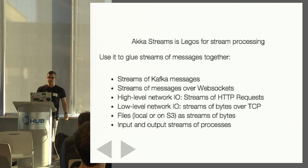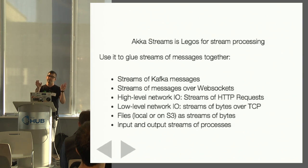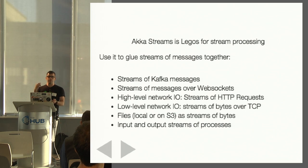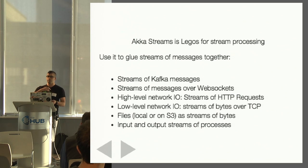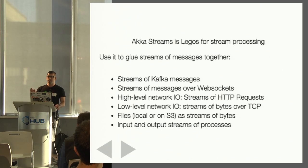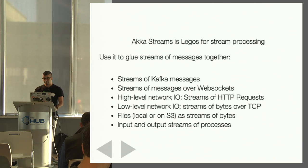So you can use streams of Kafka messages, streams of messages over WebSocket. You can do high-level IO — you can write a server that's basically a transformer that consumes a stream of HTTP requests and produces a stream of HTTP results. You can do low-level network IO — you can actually just stream over a socket, UDP, TCP. You can stream to the input or output stream of a process, so you can work with processes. You can actually call grep and throw a bunch of strings at it and have it filter, or create a little runnable that mimics grep, mapping over the input stream and producing to the output stream of the Java process.